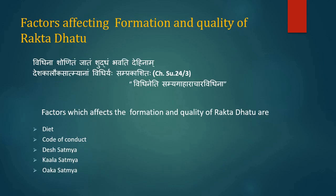Diet, Code of Conduct, Desh Saatme, Kaal Saatme and Ok Saatme are the factors which affect the formation and quality of Rakta Dhatu. Regarding diet, neither too heavy nor too light foods are good for Rakta Dhatu, while amla and lavan substances, alcohol and beverages vitiate Rakta Dhatu. Food substances like kulath, til, mulak, meat of animals living in water and marshy regions are responsible for vitiation of Pitta Dhatu and thus vitiate Rakta Dhatu. Regarding code of conduct, sleeping during the day after meals, excessive anger, exposure to sun, suppressing urges like vomiting, exertion, injury, and not performing Rakta Moksha at proper time — all these vitiate Pitta and Rakta Dhatu and should be avoided.